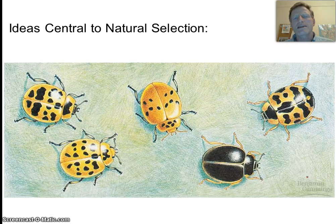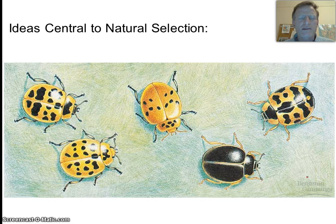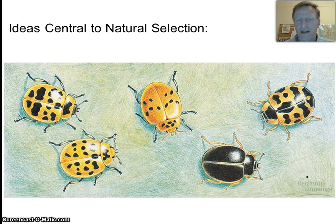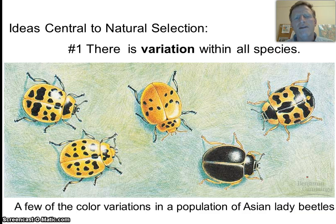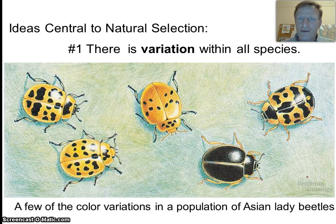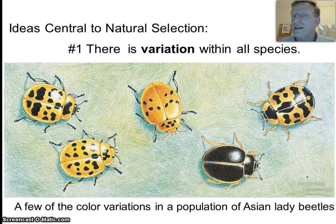A couple of ideas are central to natural selection. If you look at these Asian beetles, they're all the same species, yet you can see they're not all the same — there are variations within this population. That's important. You have to have variation within species. If everyone is the same, you can't have evolution. You can't have individuals having an advantage in passing on their traits. You must first have variation within all species.